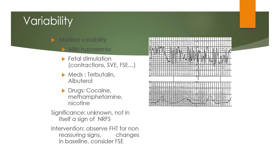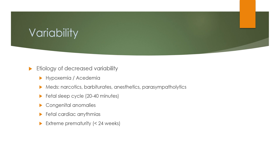Etiology of decreased variability includes hypoxemia, acidemia, and medications such as narcotics, barbiturates, anesthetics, and parasympatholytics. Other causes include fetal sleep cycle of 20 to 40 minutes, congenital anomalies, fetal cardiac arrhythmia, and extreme prematurity less than 24 weeks.